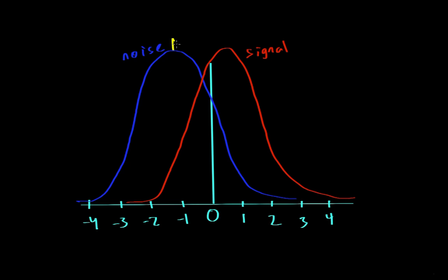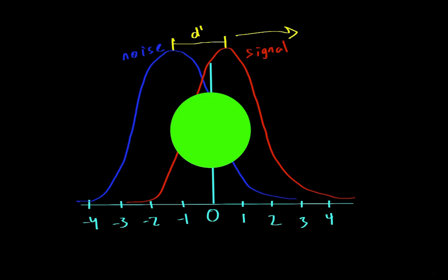So the difference between the means of these two distributions is d prime. So if the signal distribution was shifted over here to the right, then d prime would be really big. It would be a really easy task, something kind of like whether there's a green dot on the screen or not.